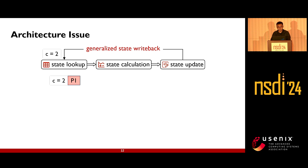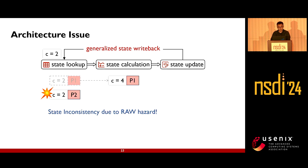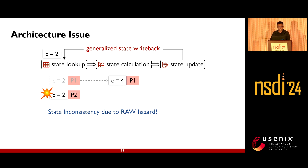For example, packet P1 reads state C as 2 in the first stage. After the state calculation in the second stage, the state C carried by P1 is 4. If no intervention is applied to packet P1 in the same flow before the state is written back, then packet P2 will read state C as 2 — a read-after-write hazard causing state inconsistency issues.